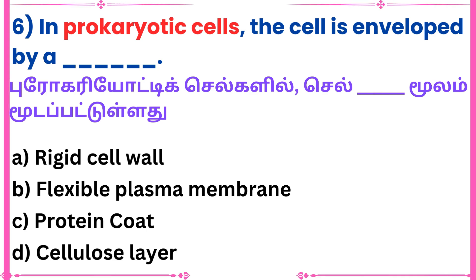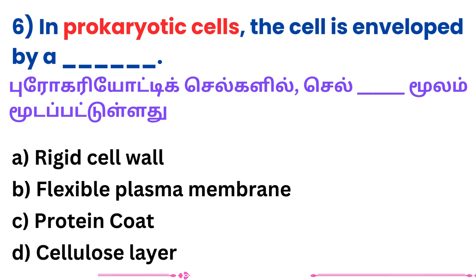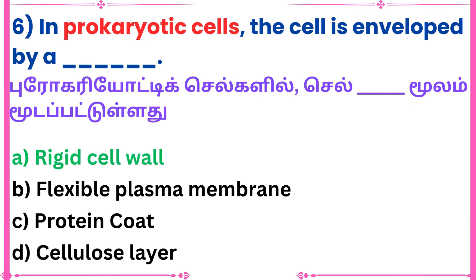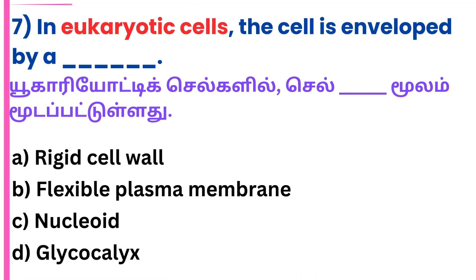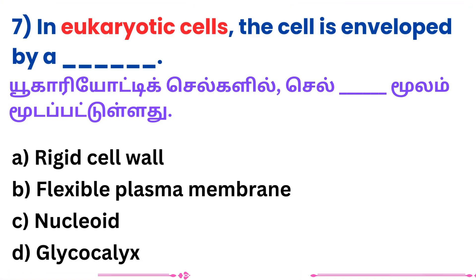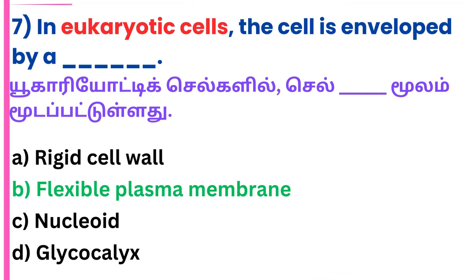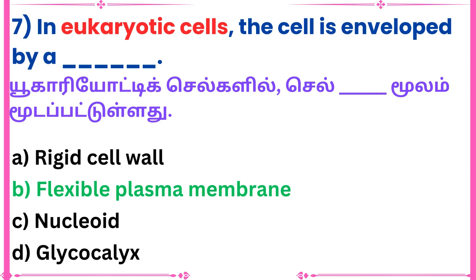Sixth question: In prokaryotic cells, the cell is enveloped by a dash. Answer: Rigid cell membrane.